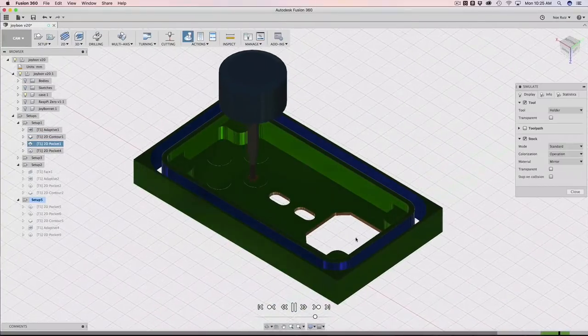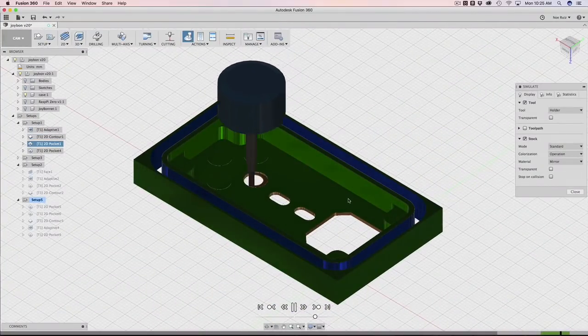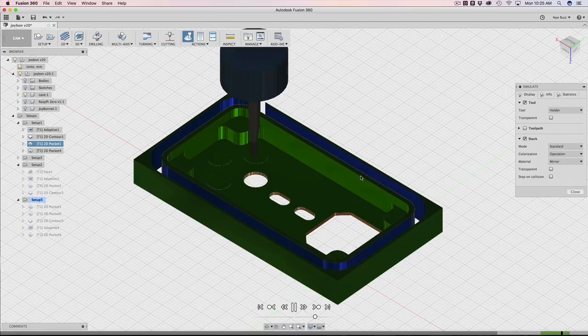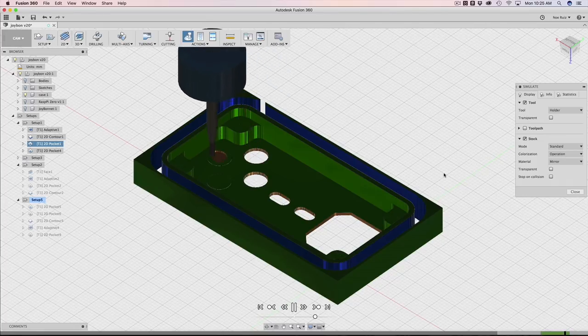I made sure to simulate each operation to avoid any collisions and limited the step downs to minimize the risk of tool breakage. Once that's done, I processed the G-code and got ready for milling.